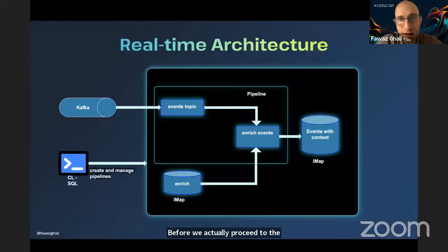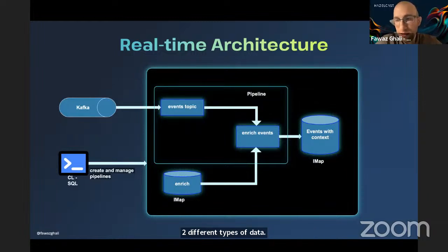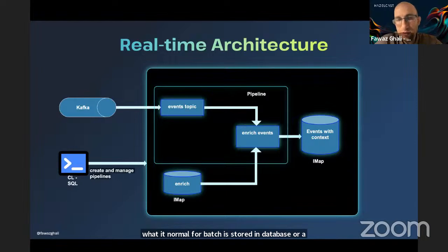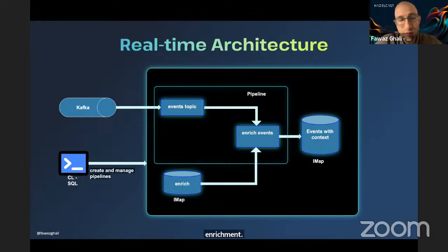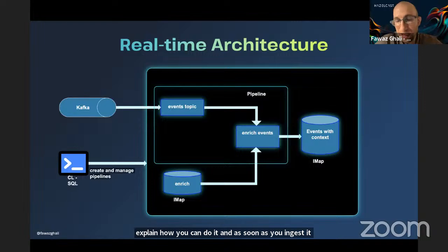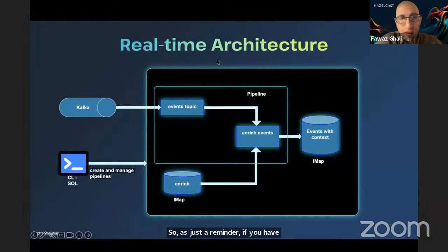If you're new to real-time stream processing, it makes sense to go through this topic before we proceed to the Jupyter Notebook demo. Here you see the real-time architecture where we talk about two different types of data ingested into your platform: real-time data coming from a Kafka topic or a batch processor, and batch data stored in a database or file system. You want to ingest these two different types of data into your platform and do enrichment. You don't need to change much to convert a batch application into a real-time application.